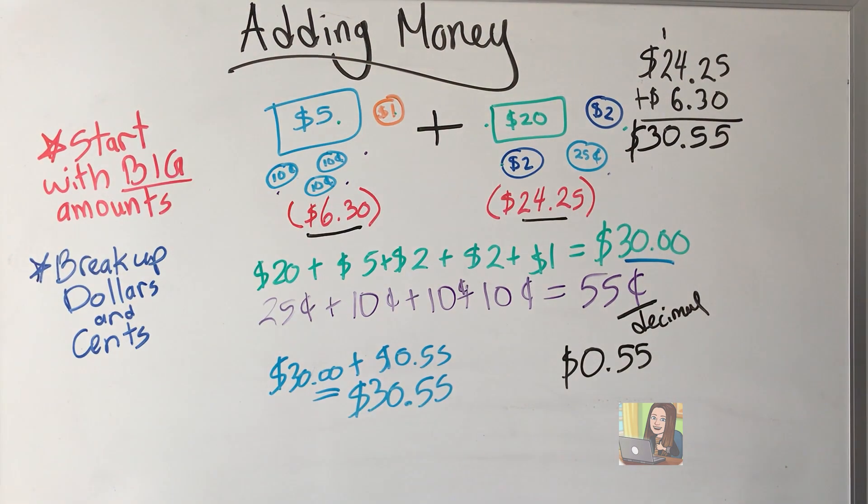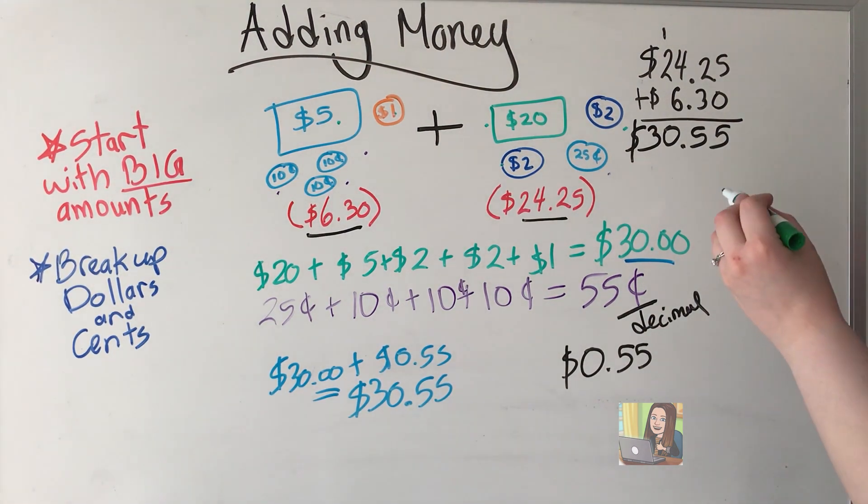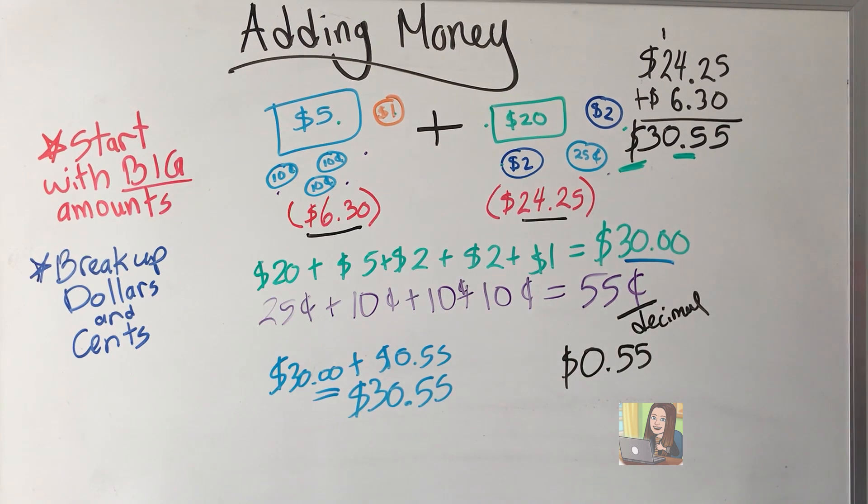My answer is not finished until I have remembered to put the decimal place and the dollar symbol in. Then I have completed my question. So yes, the total for this amount is $30 and 55 cents.